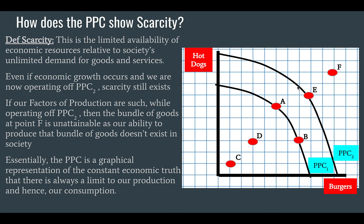Scarcity — the definition which has to be learned off word perfect — is the limited availability of economic resources, factors of production, what we use to produce goods and services, relative to society's unlimited demand for goods and services. Basically what we're saying is we have unlimited wants and needs, and we only have a limited availability of factors of production to produce those wants and needs. So there is scarcity; we cannot have everything that we want.